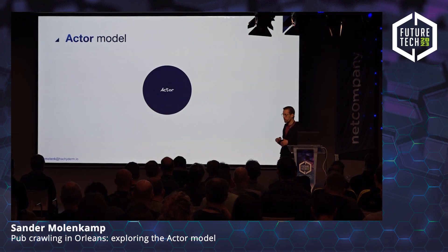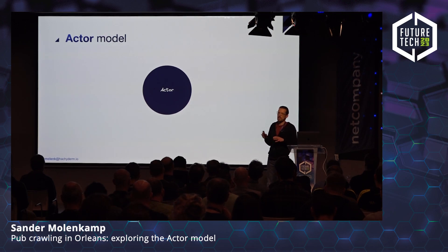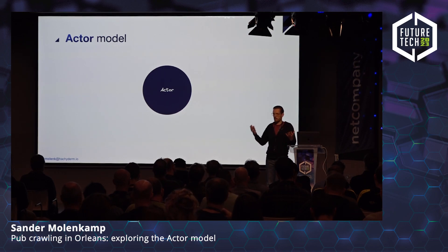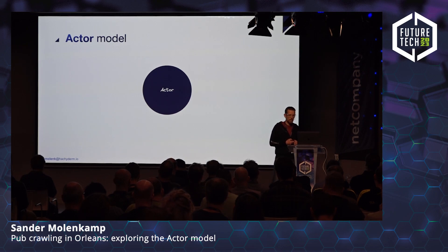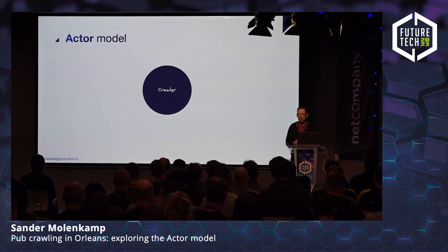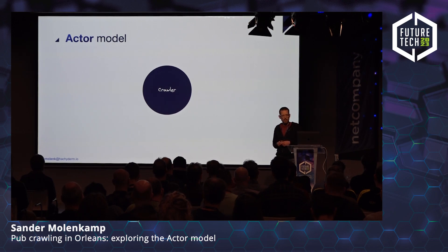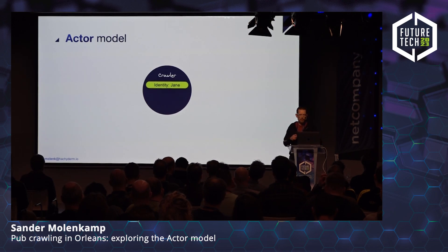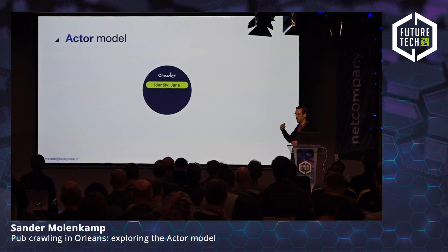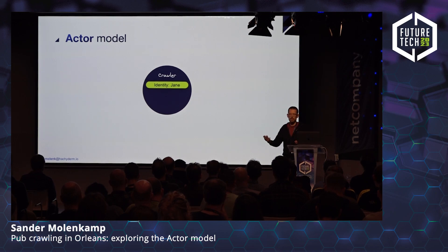In the Actor model, it's all about the actor — that's the main primitive you work with. An actor is a unit of compute and state; you can think of it as a distributed object. For our pub crawl app, I'm going to create an actor type called Crawler to represent a single participant in an event. We could have an actor for Jane, who is participating in the event. Jane will be the identity of this actor instance, because each actor instance needs an identity so we can address it and call it.